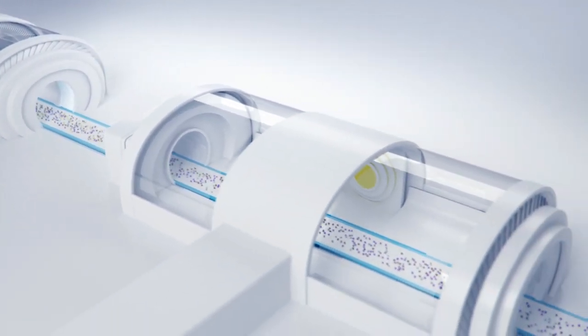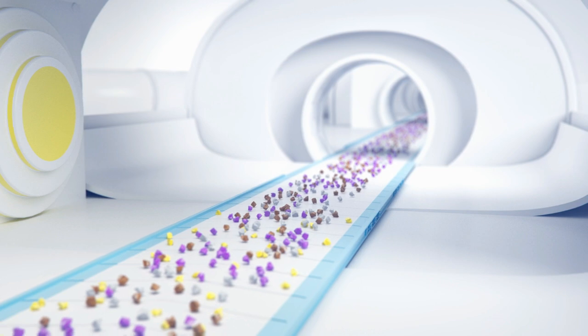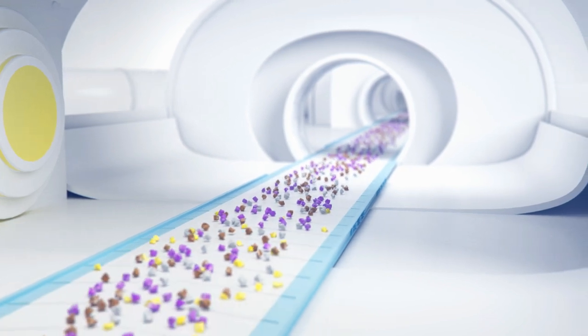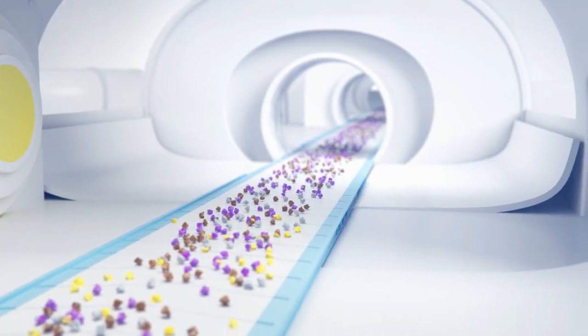Electricity is used to generate magnetic fields that separate non-ferrous metals such as aluminium from other substances such as plastics.